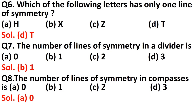Question number seven: the number of lines of symmetry in a divider. You have seen a divider in your geometry box — it is the instrument where both sides have a pointed tip. A divider has one line of symmetry, so option B is correct, that is one.